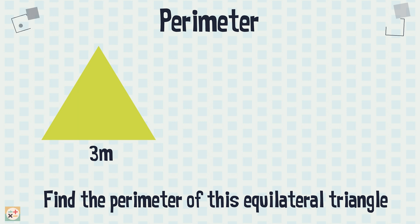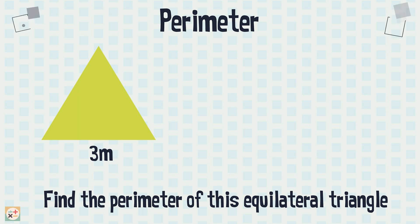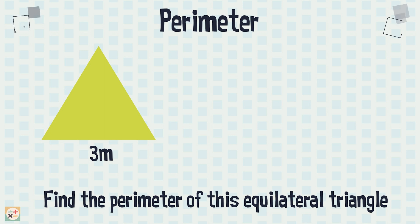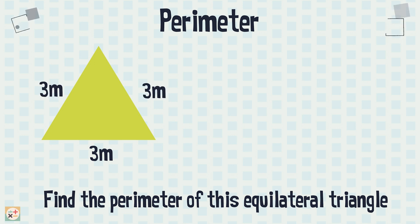Sometimes you may not be given the lengths of all of the sides and will firstly need to find the missing lengths, like with this triangle for example. We are told this is an equilateral triangle, so we know the lengths of the sides are all equal. We can use this information to calculate the perimeter.